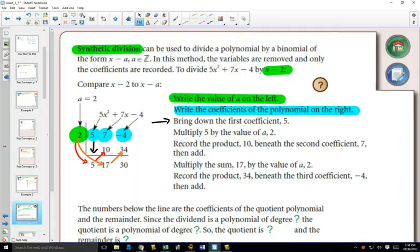And add again. And then you can, with that answer that you get at the bottom, this is always going to be your remainder right here. And working backwards, you can add your variables. So it'll be 5X plus 17, remainder 30.